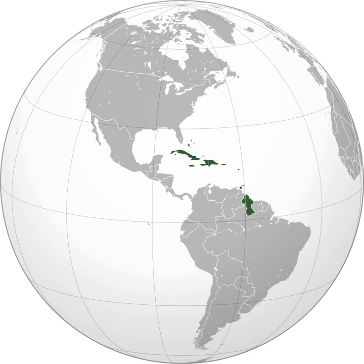Bermuda and the Turks and Caicos Islands, which are in the Atlantic Ocean, are associate members of the Caribbean Community. The Commonwealth of the Bahamas is also in the Atlantic and is a full member of the Caribbean Community. The organization called the Association of Caribbean States consists of almost every nation in the surrounding regions that lie on the Caribbean, plus El Salvador, which lies solely on the Pacific Ocean. According to the ACS, the total population of its member states is 227 million people.